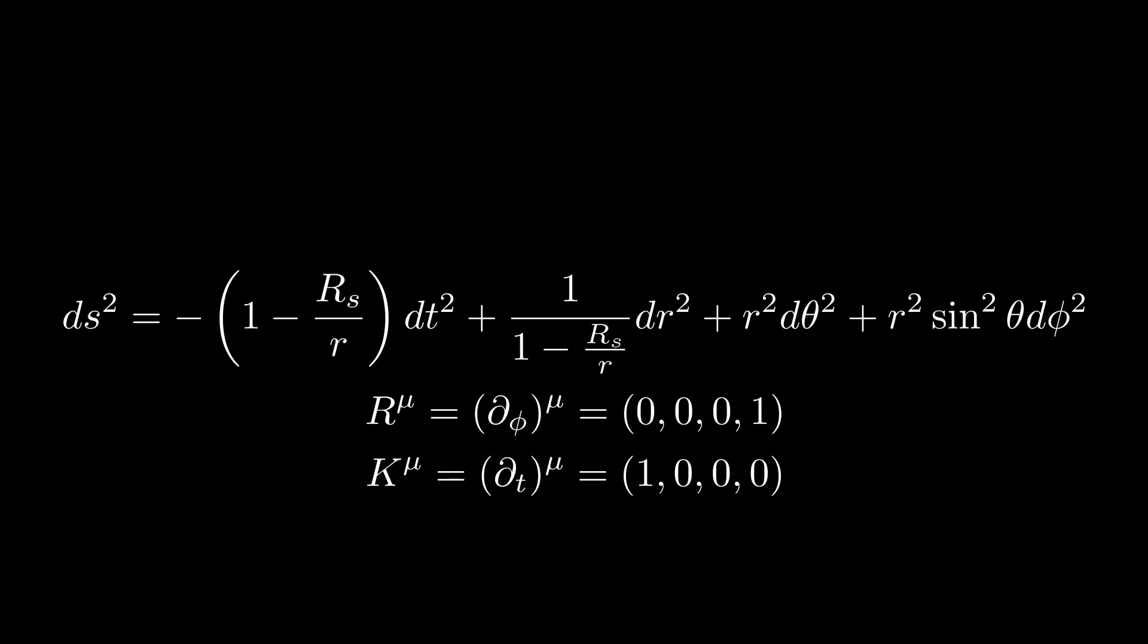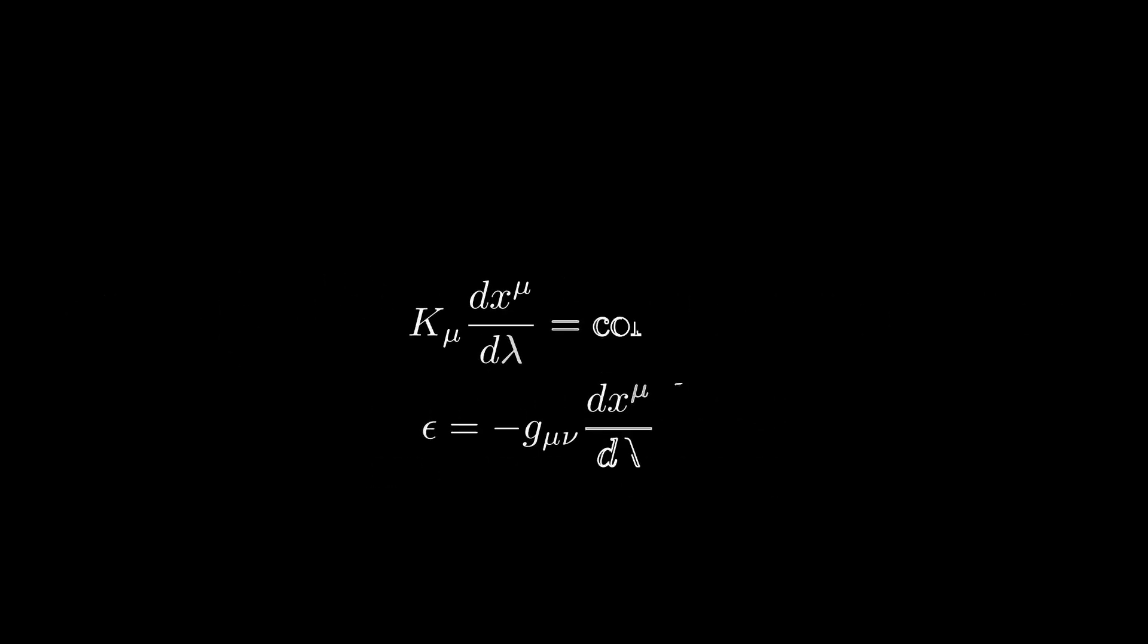Mathematically, we can substitute our killing vectors into the top equation and set the constants as E for energy and L for angular momentum. The second equation is equal to a number, epsilon. This number is plus one for particles with mass. If we get the constants from the top equation and use the Schwarzschild metric in the bottom equation, we will get an equation of the following form.